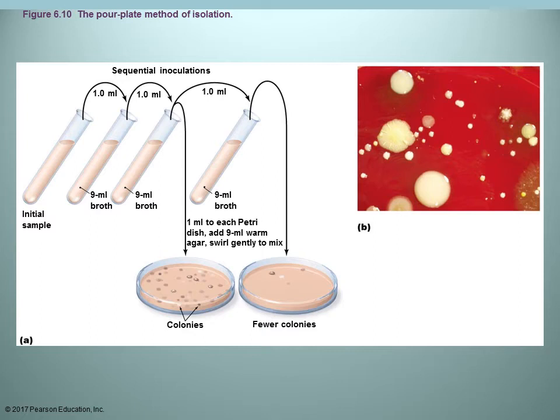In the pour plate method, you have your initial sample in a tube, inoculate it, and then dilute it by passing it to successive tubes. The tube contains liquid agar, which you pour into a plate, diluting the sample further. Each successive dilution should yield fewer and fewer colonies. Unlike a streak plate where growth is only on the surface, a pour plate allows colonies to grow not only on the surface but also embedded within the agar itself.